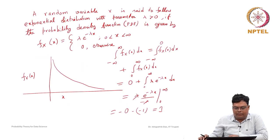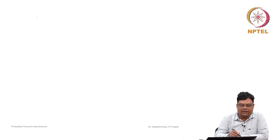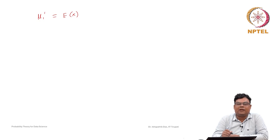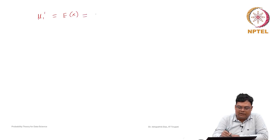We will find the mean. mu_1' is the mean, which is the expected value of x. You have understood how to find mean and variance of a discrete random variable. We are also doing it for the continuous random variable because these distributions are very important. We need to know their mean and variances. The mean of the exponential random variable is by definition the integral from minus infinity to plus infinity of x f(x) dx.